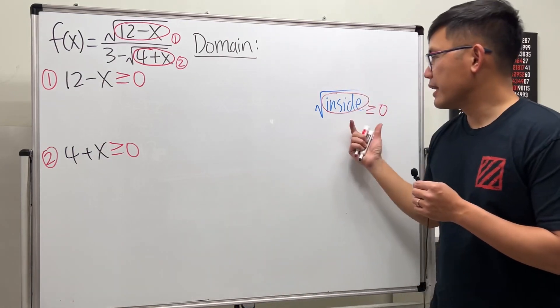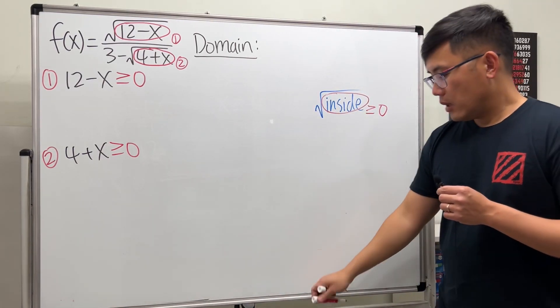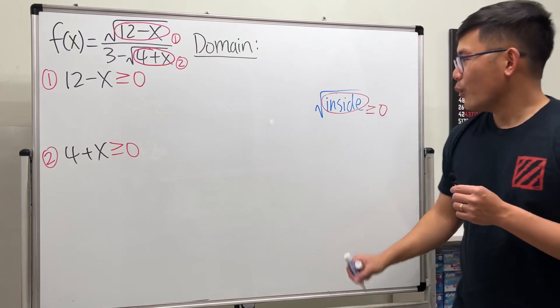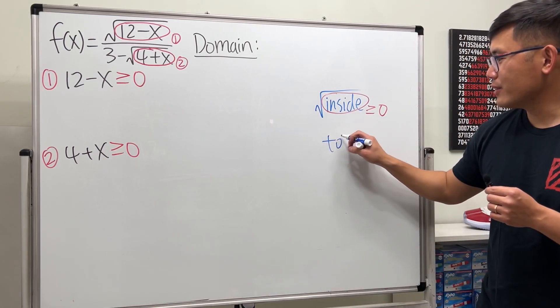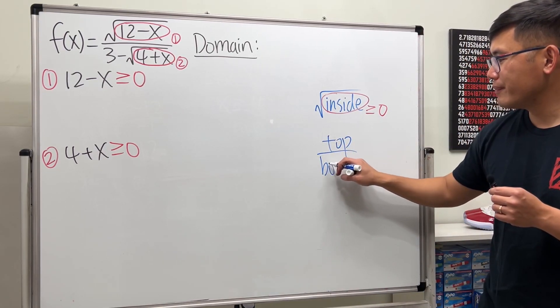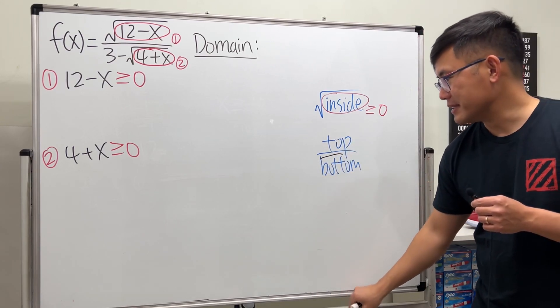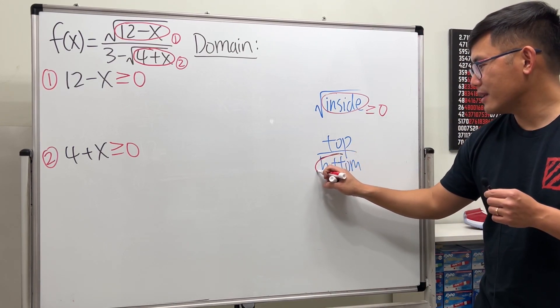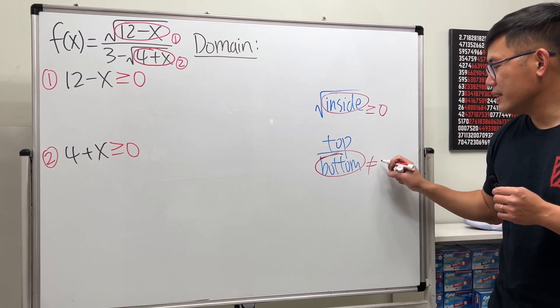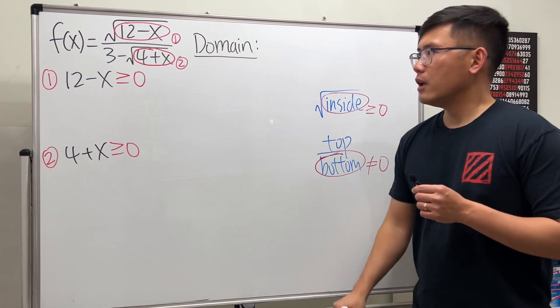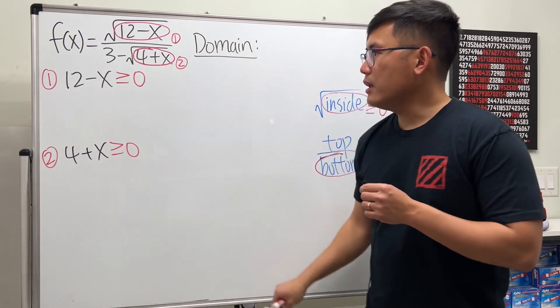Next, whenever we have the expression top over bottom, in this case we have to make sure that the bottom is not equal to zero. We have to make sure that this is not equal to zero. So if you look at the whole thing, we see that we have this.